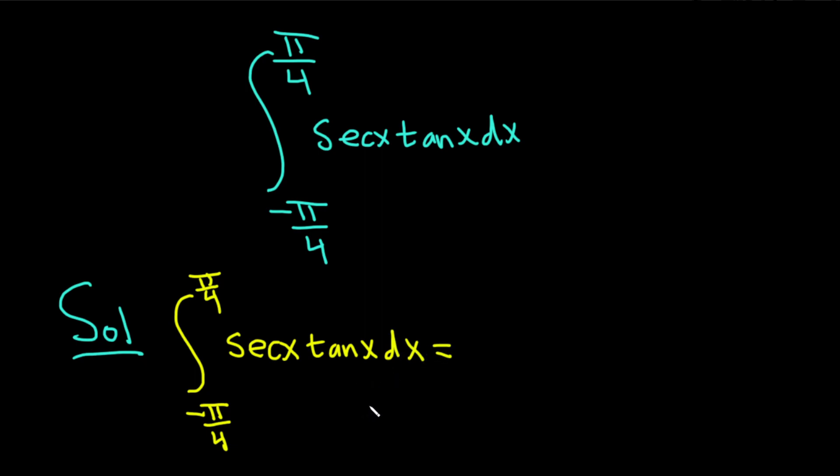And so we'll start by asking the question, how do we integrate secant x tangent x? So in other words, what's a function whose derivative is secant tangent? Well, secant. If you take the derivative of secant x, you get secant tangent. Therefore, the integral of secant tangent is secant x.